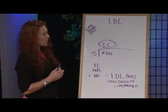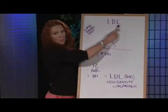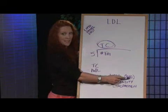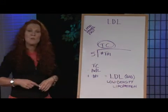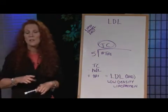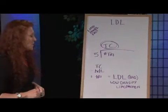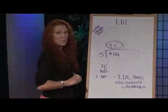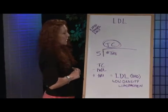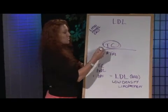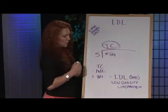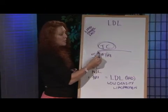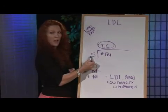You've probably heard low density lipoproteins being referred to as the bad cholesterol. Remember, our body manufactures all the cholesterol that we need, so we want to make sure that we don't have what we don't need in excess. What happens is first we actually calculate the total cholesterol. We do this by dividing whatever number comes back for triglycerides by five.